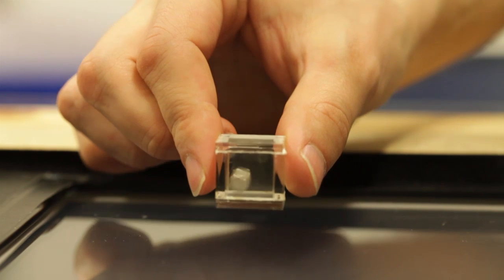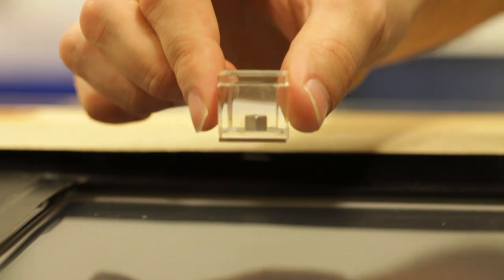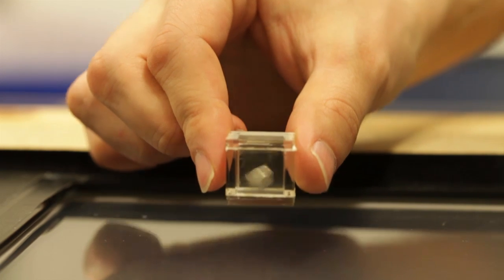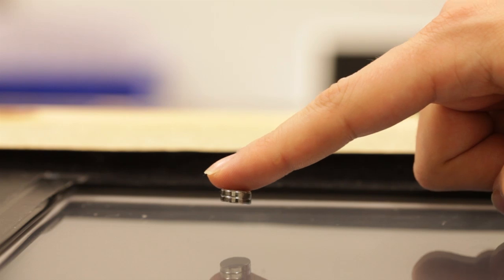However, Finger Flux can provide haptic feedback without the need for tangibles. We exploit the fact that the electromagnetic field reaches well above the table surface. Attach a magnet to your fingertip, and you can feel these electromagnetic forces above the table.